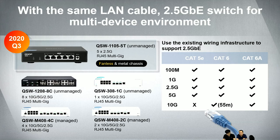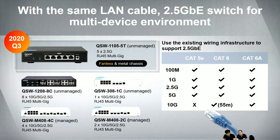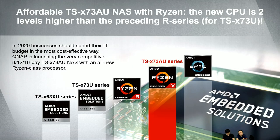QNAP also has many PCIe adapters with 5G and 10G that you can install in desktops and servers for higher speed. We also have USB-based adapters that let you connect to your laptop or other devices to support 2.5G and up to 5G speed. When you've upgraded your infrastructure, your storage also needs to support and sustain higher speeds — that's why QNAP is launching the new 73AU series with a much better processor.